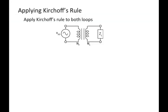Let's apply Kirchhoff's loop rule to a circuit with the transformer. We hook up an input signal — a signal generator — to the primary side, and we hook some load (it could be a resistor, a capacitor, whatever) on the secondary side.